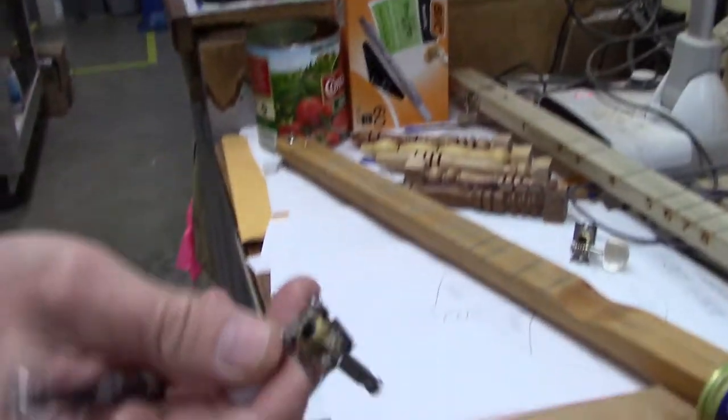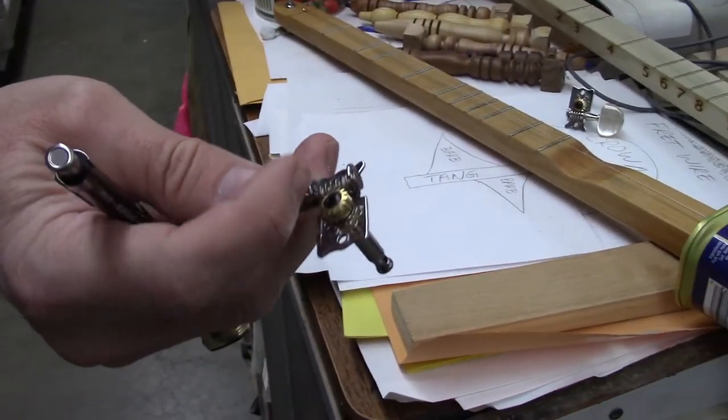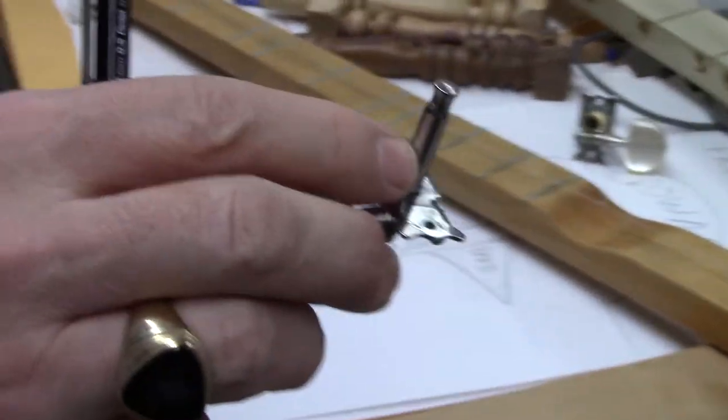So that's a tuning machine. It's called a machine because it's got two gears, a worm gear and a crown gear. And then that's that post or technically it's a capstan.